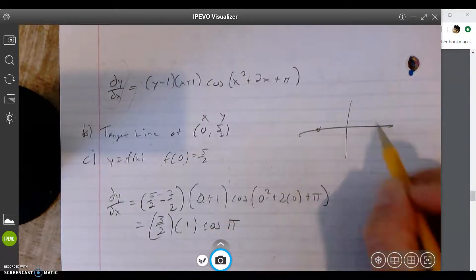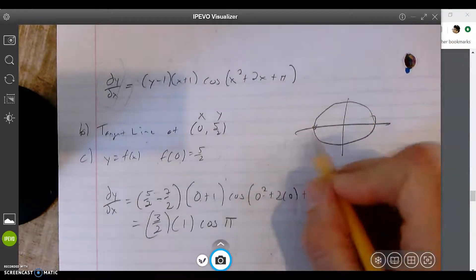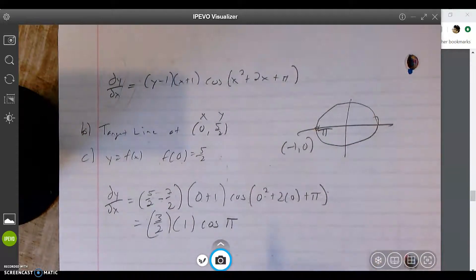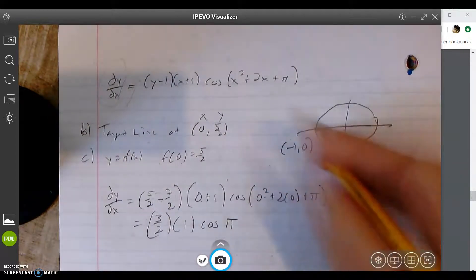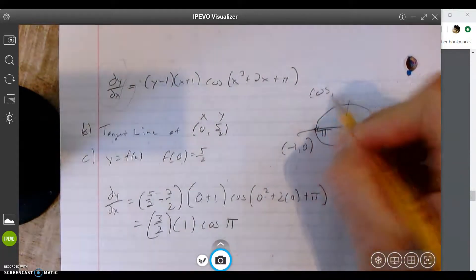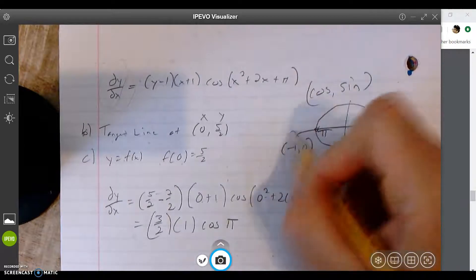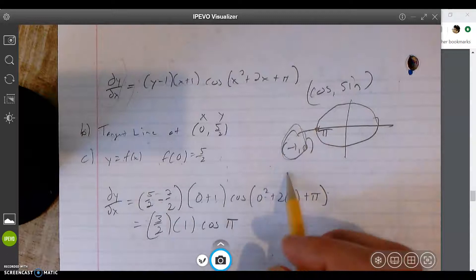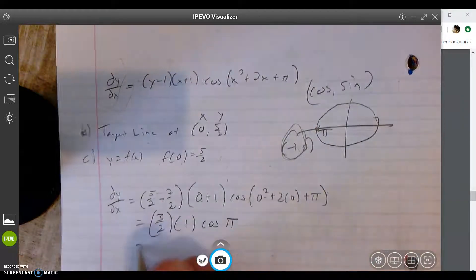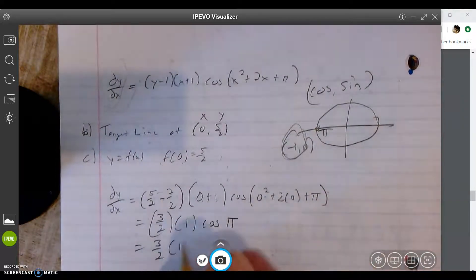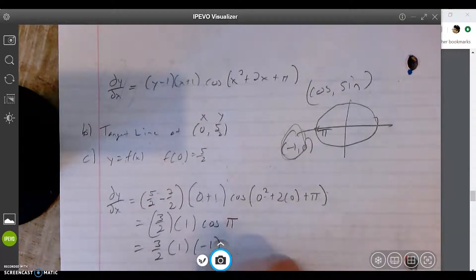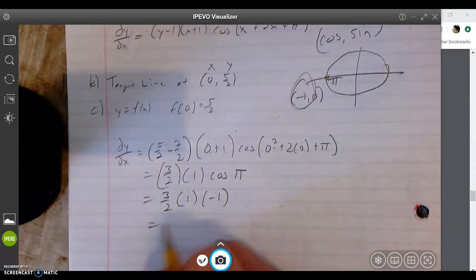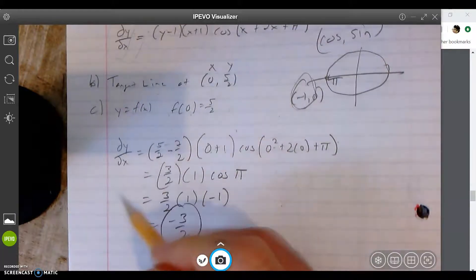This is π over here on my unit circle. This point is (-1, 0). Cosine is the x, sine is the y. So the answer to it is -1. Got it. So it's 3/2 times 1 times -1. -1 times 3/2 is -3/2. Bam. So that's your slope of your tangent line.